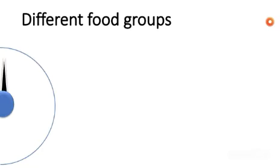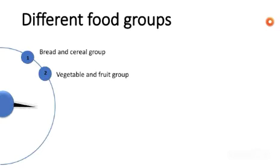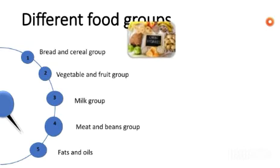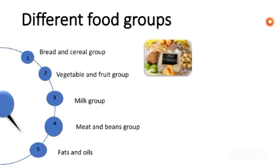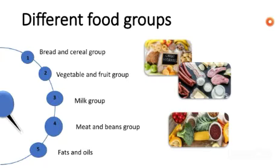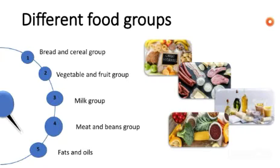Now let us revise the different food groups. The groups are as follows: the bread and cereal group, the vegetable group, the fruit group, the milk group, the meat and beans group, and fats and oils. So these are the five food groups.